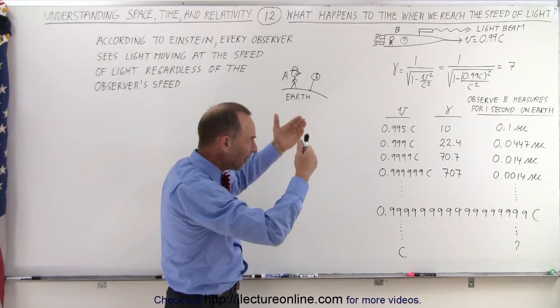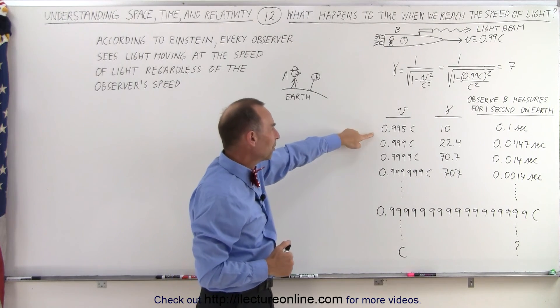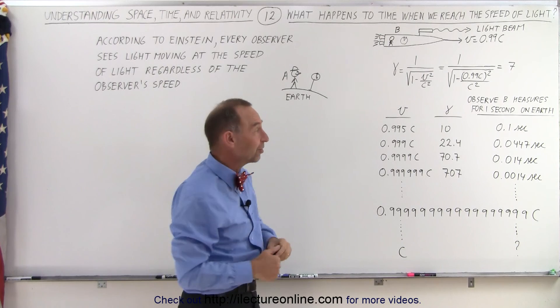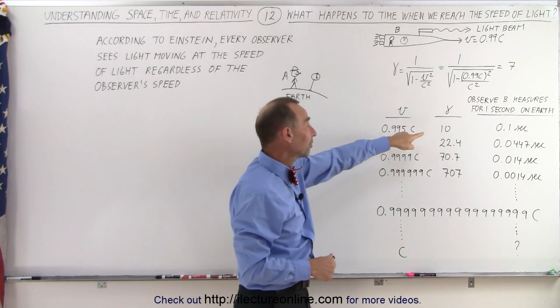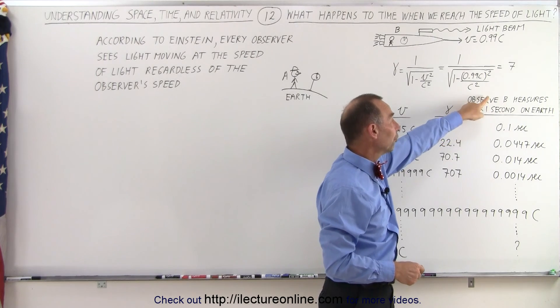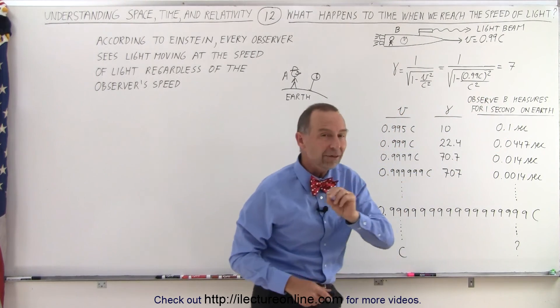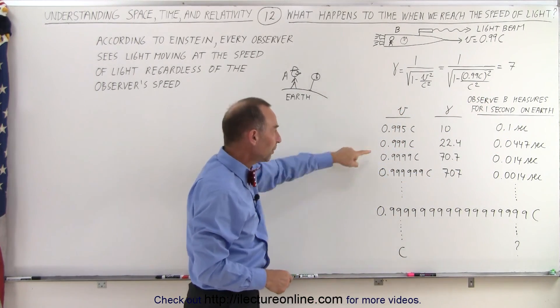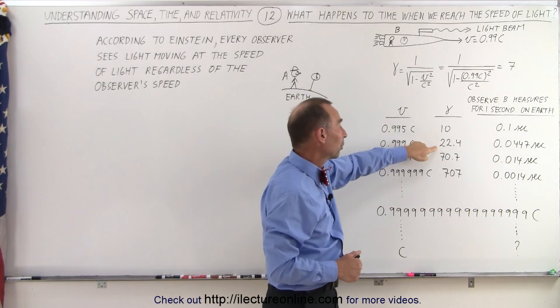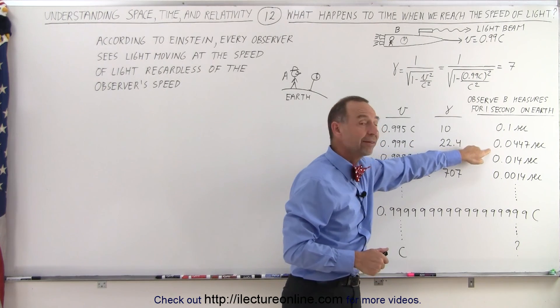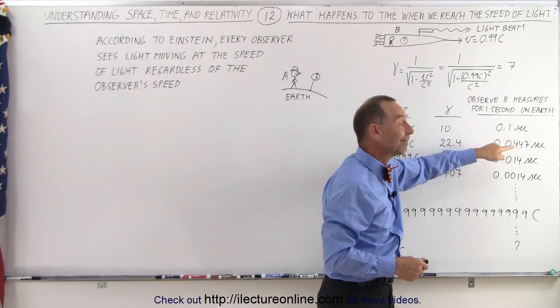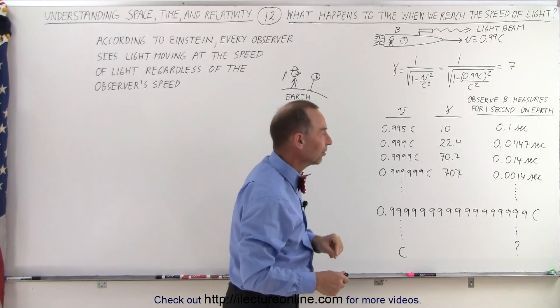Let's carry this a little bit further. What happens if the spaceship now speeds up to 0.995c, 99.5% the speed of light? The Lorentz factor now becomes 10. So for every second passing on the Earth, Observer B only experiences a tenth of a second. Speed up even more to 99.9% the speed of light, now the Lorentz factor is 22.4, and the amount of time passed for Observer B for every 1 second on the Earth is now less than 0.05 seconds.